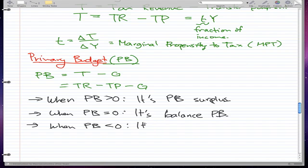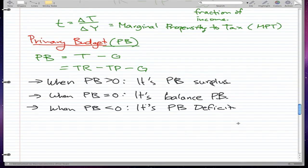Lastly, when PB < 0, it's a PB deficit. What happens is that what the government collected is less than the amount they're spending and the transfer payments, or the tax revenue equals their government spending but they didn't cover the transfer payments. That's the idea about primary budget.